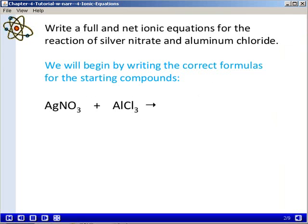We'll start by writing the correct formulas for the starting compounds. Silver nitrate is AgNO3 and aluminum chloride is AlCl3.